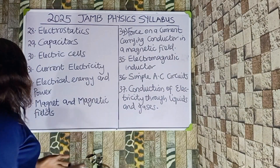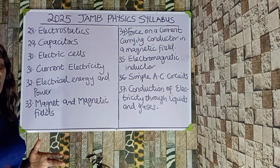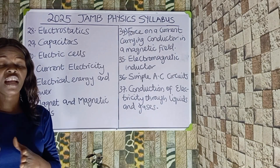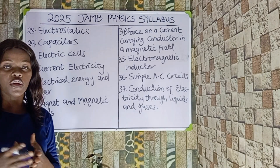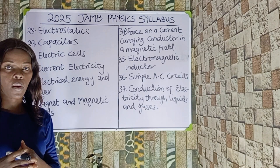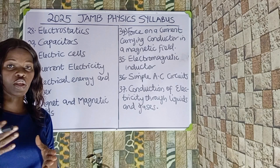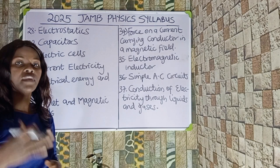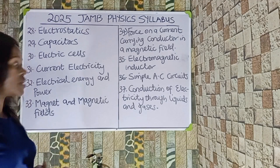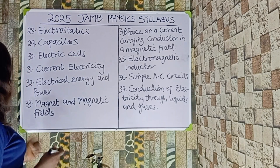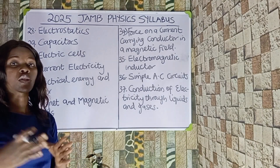Number twenty-seven is electrostatics. Under electrostatics we should be looking at electric charges, conductors and insulators, and how to produce electric charges. We have the electrophorus and the gold leaf electroscope — these all fall under electrostatics.